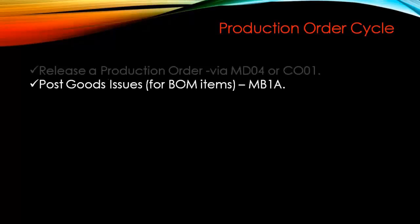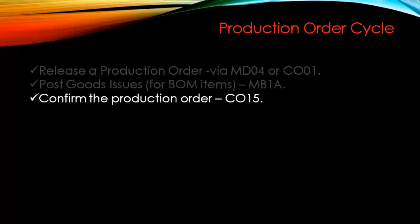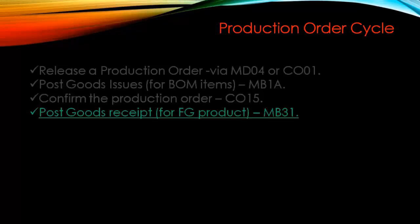In the previous lecture I discussed the production order cycle: we release the production order, post Goods Issue for the BOM items, confirm the order, and finally post the Goods Receipt. Goods Receipt means the finished goods have arrived into stock. Today we'll talk about more options and functionality around the Goods Receipt.